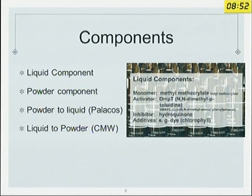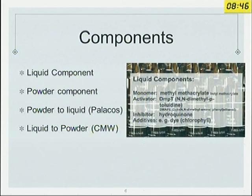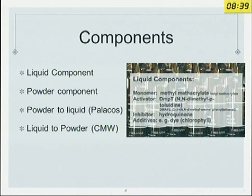The components are in two parts: a liquid part and a powder part. Some cements are mixed powder to liquid — a few like Polycos — and most are mixed liquid to the powder. The liquid components are the monomer, the activator, the inhibitor, and the additives.